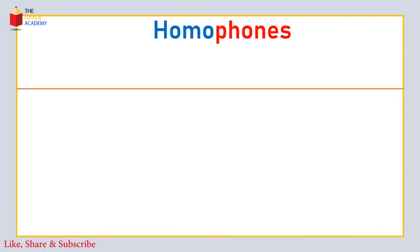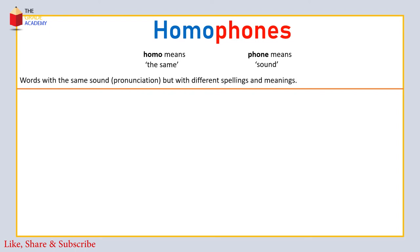हम homophones से start करते हैं। Homo means 'the same' and phone means 'sound'। तो homophones English में ऐसे words होते हैं जिनकी sounds same होती हैं, यानि जिनकी pronunciations same होती हैं। Homophones को हम इस तरह define कर सकते हैं: words with the same sound or pronunciation but with different spellings and meanings। आइए अब homophones की कुछ examples देख लेते हैं।